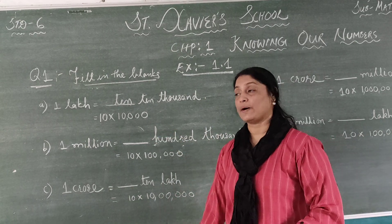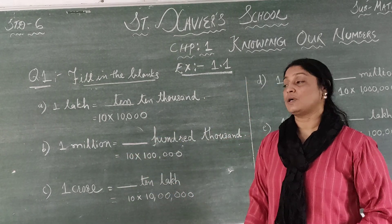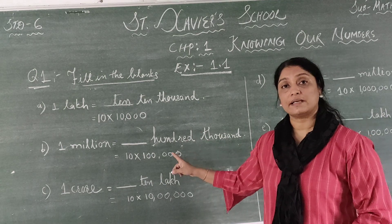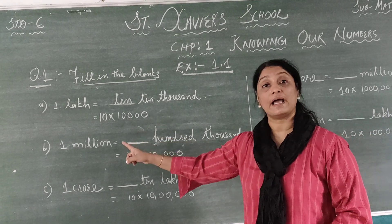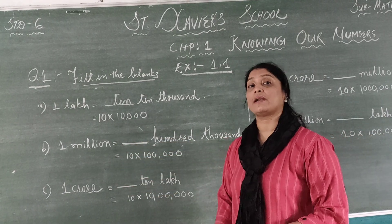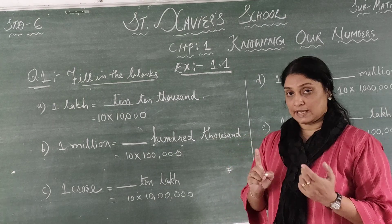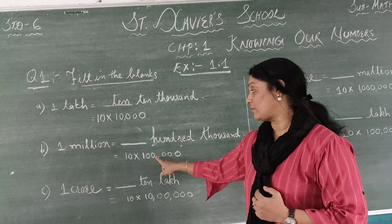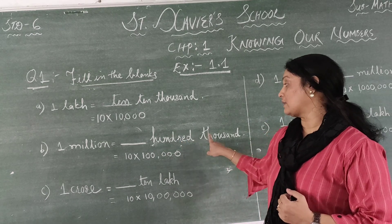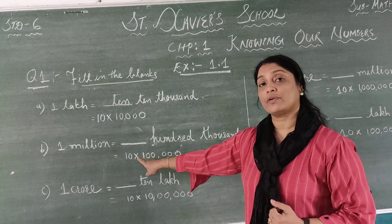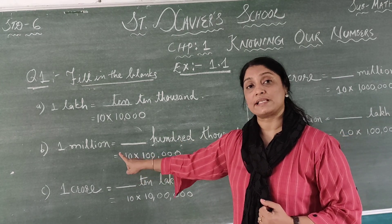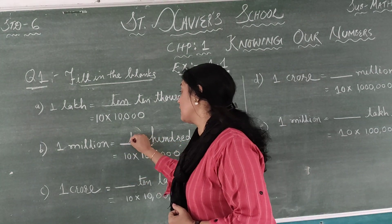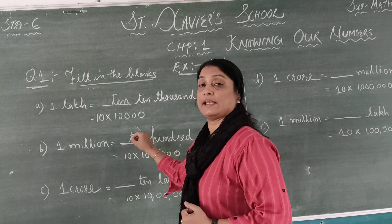Part B: 1 million is equal to blank times 100,000. You have 100,000 and you need to make 1 million. How many zeros are in 1 million? There are 6 zeros. 100,000 has 5 zeros. When you multiply by 10, it becomes 1 million. So again the answer is 10.